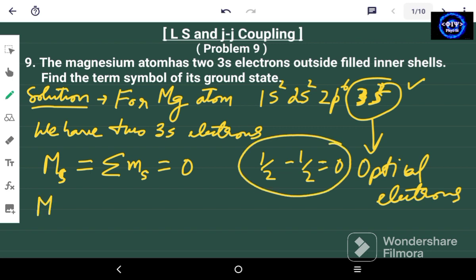The value of capital ML which is actually equal to the summation of orbital magnetic quantum number, because for S electrons the small L is equal to 0, must also be equal to 0.